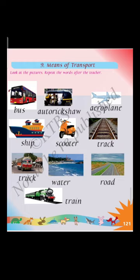We go from one place to another place by different means of transport. We use transport to go to another place and also to carry goods from one place to another. They can be used on land, water or air. We divide them into three: land transport, water transport, and air transport.